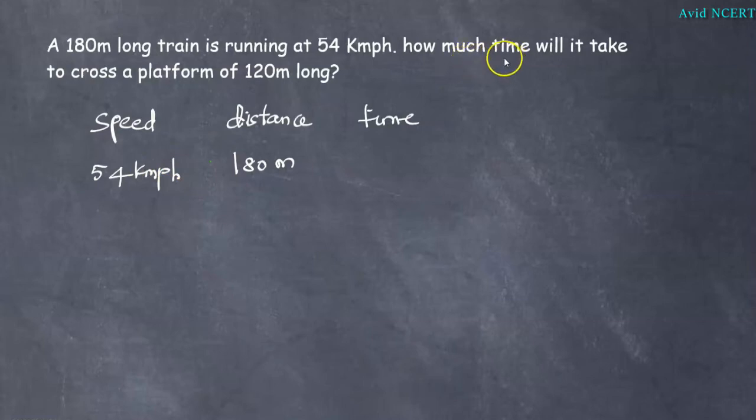How much time, time is question mark. Will it take to cross a platform of 120 meter long? So another 120 meter long is distance. So the total distance we have is 180 plus 120 which is 300 meters.